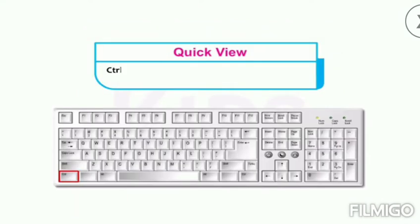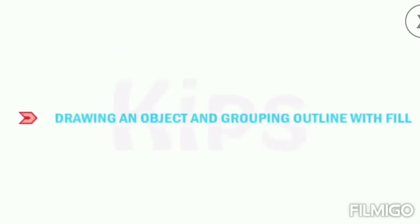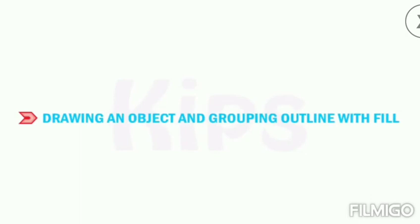Ctrl+J is the shortcut key to display the Document Properties dialog box. Now let us understand how to draw an object and group an outline with fill.